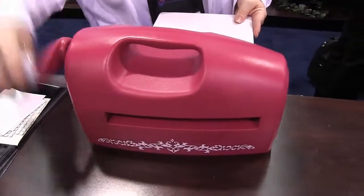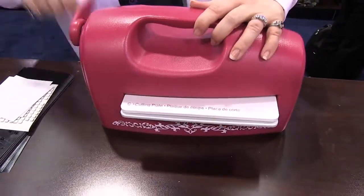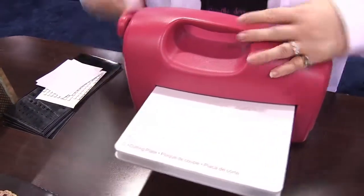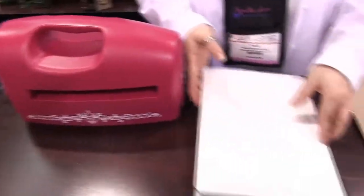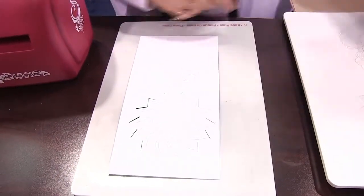The first pass through the machine is going to make all of the cuts, and I'm using the Grand Caliber, which is a manual die cutting and embossing machine. We're just going to run these through. Now that first pass, you can see all of those cut lines are made in there.